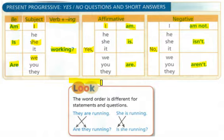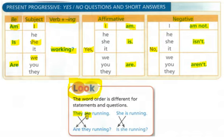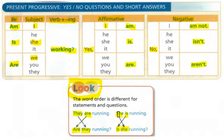Let's have a look at the word order. For example, the statement we have — they are running — put in a question, we move these around to: are they running? Again, she is running in a question becomes is she running? So the verb and the subject are changing order.